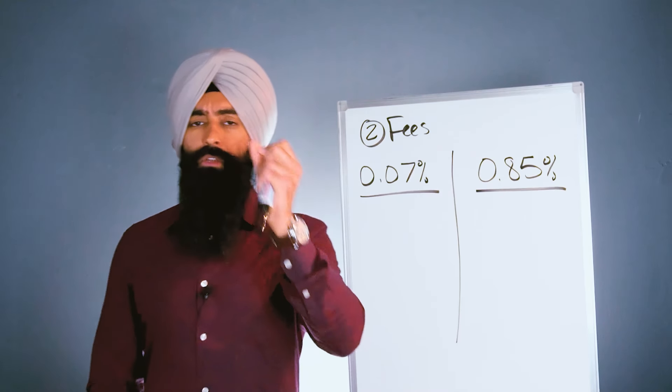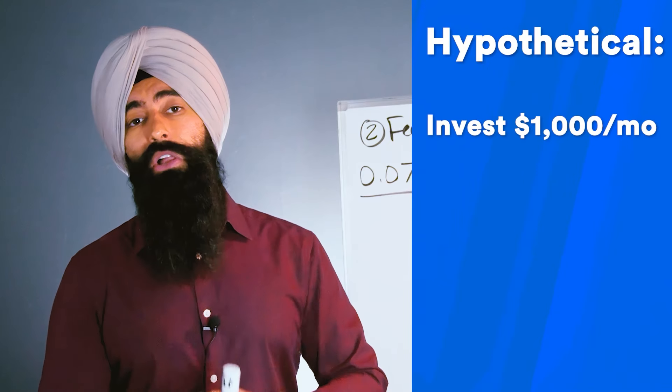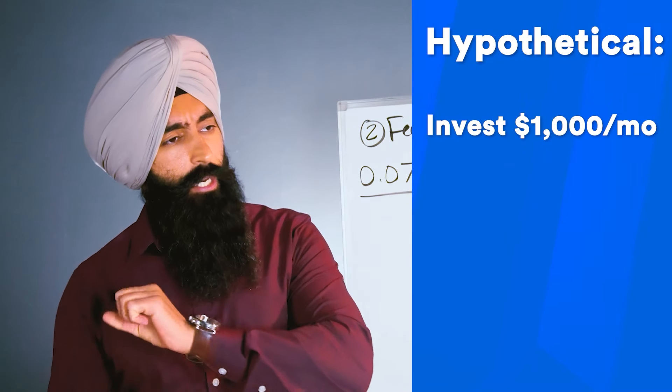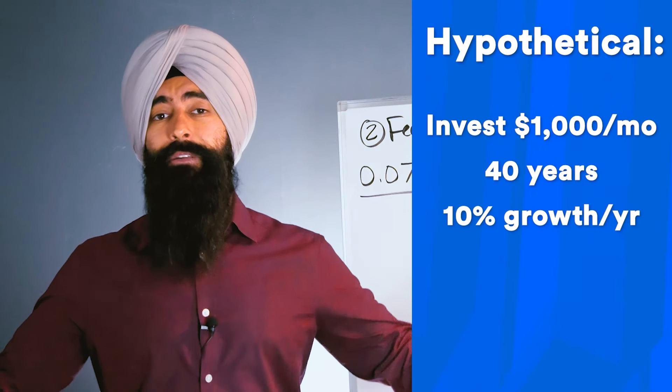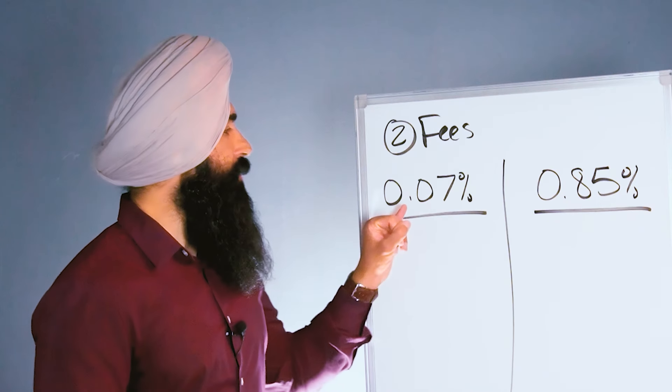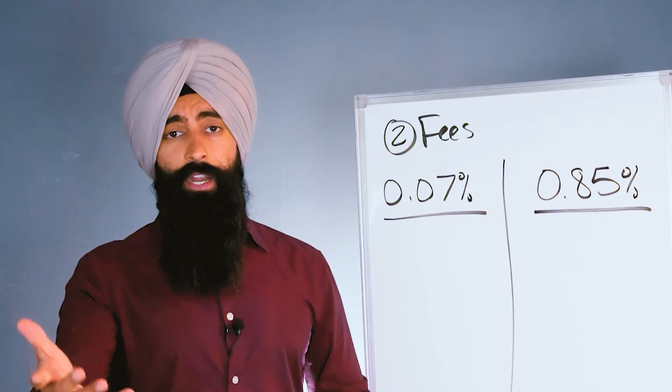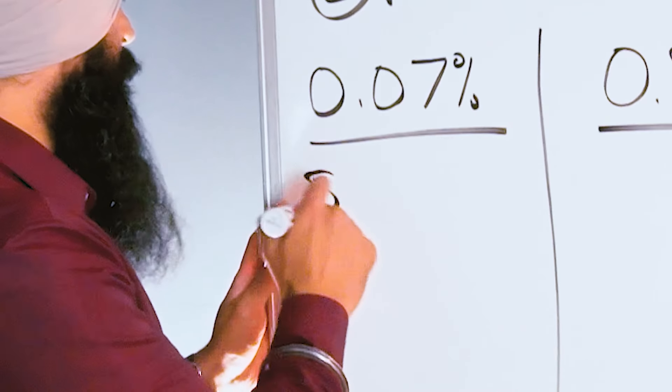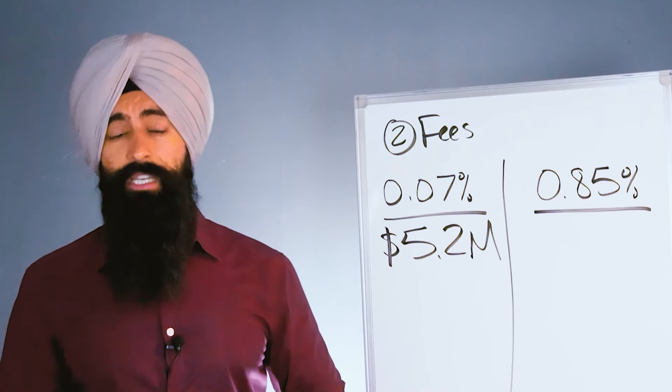Let me give you a hypothetical. Let's assume you're investing $1,000 a month in your 401k for the next 40 years, and your money grows by 10% a year on average. If your expense ratio is 0.07%, when you retire your 401k would have right around $5.2 million sitting there.